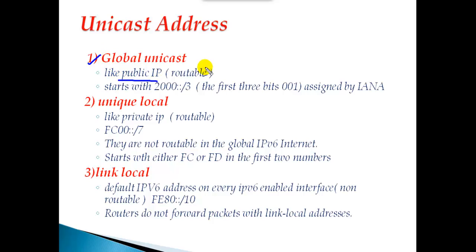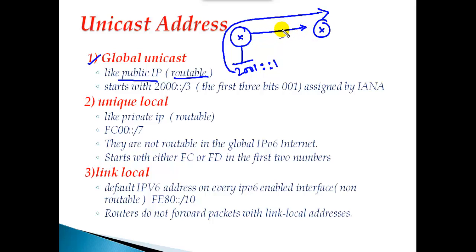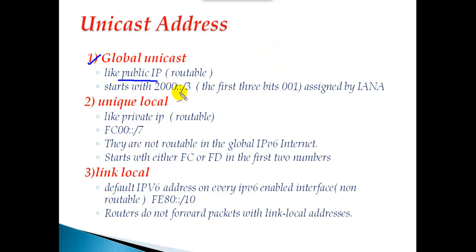The global unicast address is like a public IP and it is routable, meaning if I assign an IPv6 address like 2001::1, this address will be advertised when you are using some routing. The router is going to carry this network information to a different router — that's what we call routable. Now how do we identify whether it is a global unicast address or a unique local address?